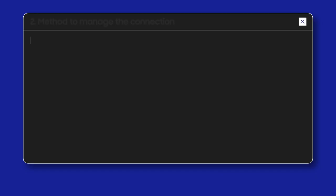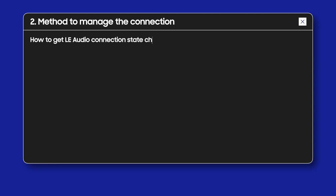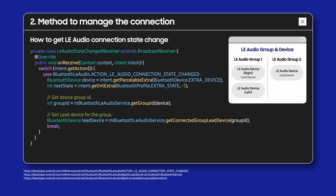Next, let's look at how to get information on LE Audio connection status. Unlike legacy Bluetooth, LE Audio has two devices — right and left earbuds — so they have their own connection status and both are managed as a group. You can receive connection status for each of the devices in the same group through an intent. API Level 33 provides the GetGroupID API and the GetConnectedGroupLeadDevice API, where you can check the group ID and lead device using them.